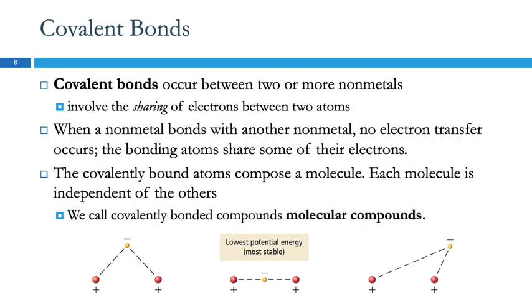Covalent, as the prefix co- suggests, refers to sharing. Here we're sharing the electrons instead of transferring from one to another. Covalent bonds occur between two or more nonmetals.